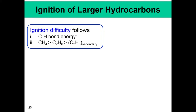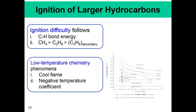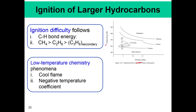What about oxidation or ignition of larger hydrocarbons? Ignition difficulty depends on two things, the most important being CH bond energy. Methane is the hardest to ignite, followed by ethane, then propane. In a temperature-pressure curve, methane becomes explosive only at very high temperature and pressure, while ethane and propane follow progressively. Propane shows a very complicated behavior characterized by two things: cool flame and negative temperature coefficient, both very interesting phenomena.